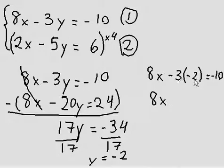So 8x, negative 3 times negative 2 is positive 6, equals negative 10.